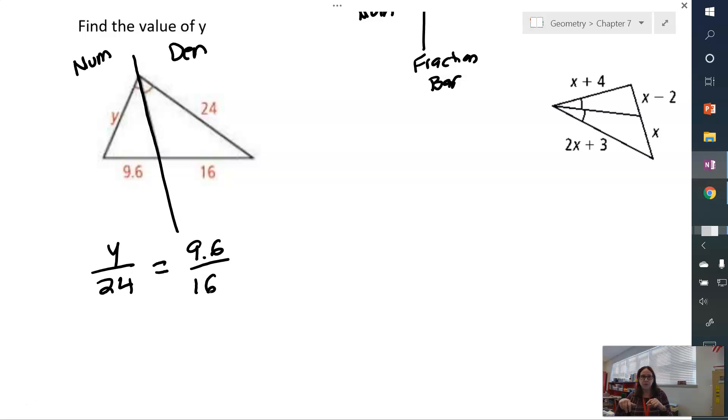So, now I've set up my ratio using the triangle angle bisector theorem. Geometry is done. Now it's time to do the algebra. Cross multiply and solve. 16Y equals, do 9.6 times 24 on your calculator. I got 230.4. And then divide by 16. So, right here is 14.4.